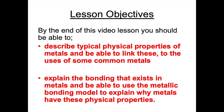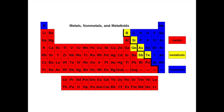A good starting point is for us to look at the periodic table. The periodic table is a list of elements in order of atomic number. Metals are found on the left hand side of this table and non-metals to the right hand side. The only exception is hydrogen. In between the metals and non-metals we have metalloids, which have intermediate properties between metals and non-metals.